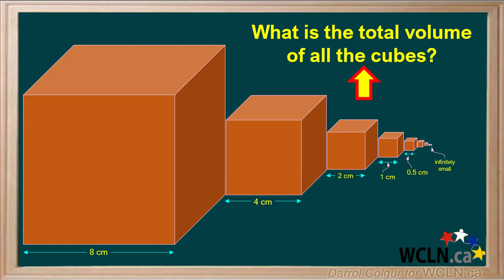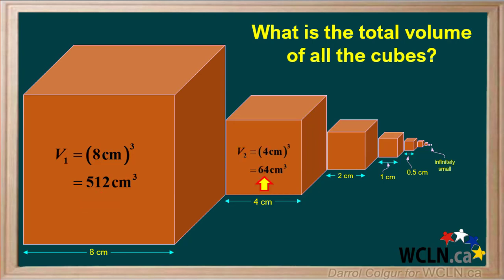We're asked for the total volume of all the cubes. The volume of a cube is the length cubed, so the volume of the first cube, V1, would be 8 cm cubed, or 512 cm³. The volume of the second cube, V2, would be 4 cm cubed, or 64 cm³.